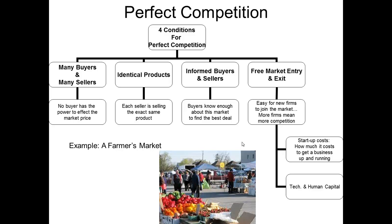The second condition for perfect competition is that the products have to be identical — not close, but identical — and that knocks a lot of potential markets out of consideration. You also have to have informed buyers and sellers, and you have to be able to enter the market and exit easily.